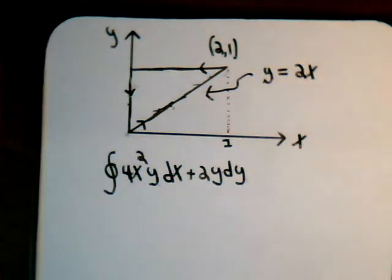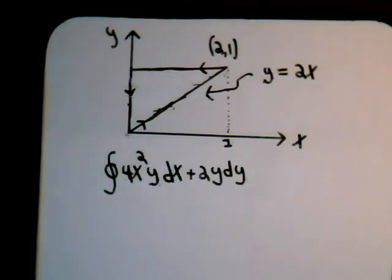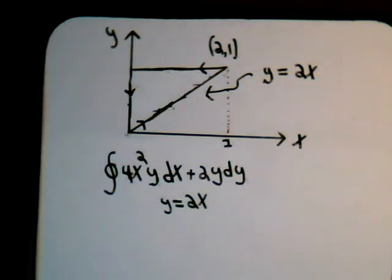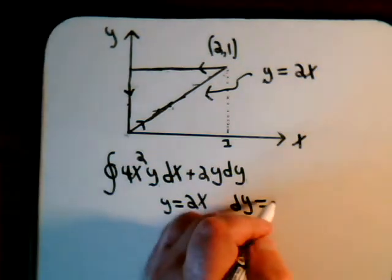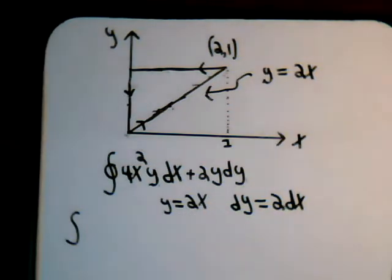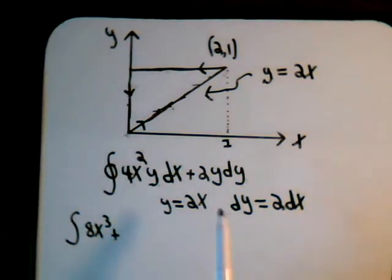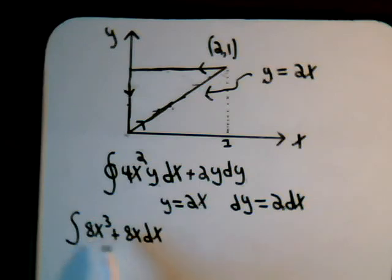We have the line segment y equals 2x, then we go along the horizontal line, and then down the vertical line. First, consider the line y equals 2x. We substitute y = 2x into the integrand, and dy becomes 2dx. This gives us 4x² times 2x, which is 8x³, plus 2 times y — that's 4x — times dy, which gives plus 8x dx. So everything is now expressed in terms of x's and dx's.